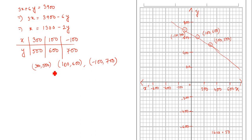Now we will draw the next equation, that is x plus 3y equal to 1300. For that, we are making the values x and y.